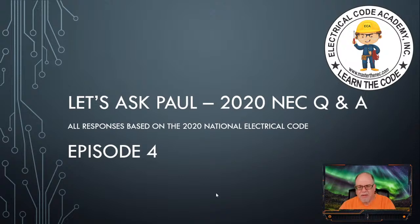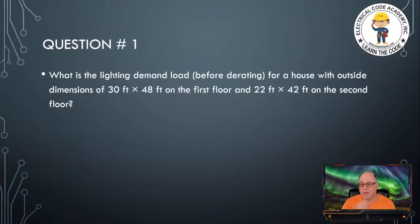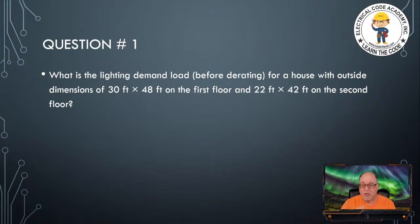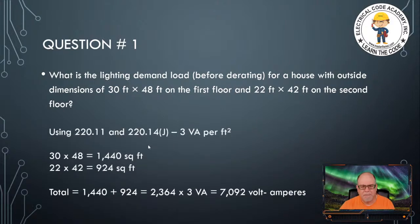The very first question on the docket wants to know what the general lighting load is — the connected value before any derating or demand factors are applied. What is the lighting demand load for a house with outside dimensions of 30 by 48 on the first floor and 22 by 42 on the second floor? We need to find our total square footage.